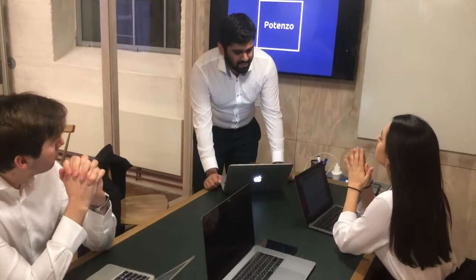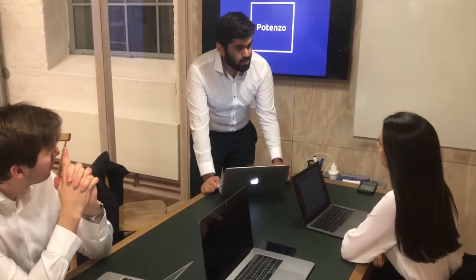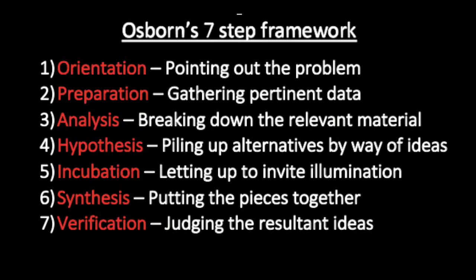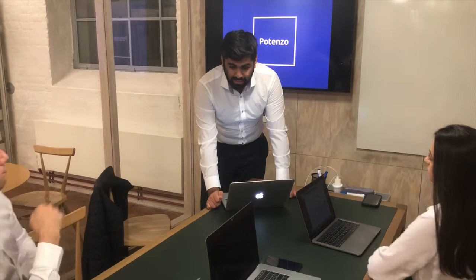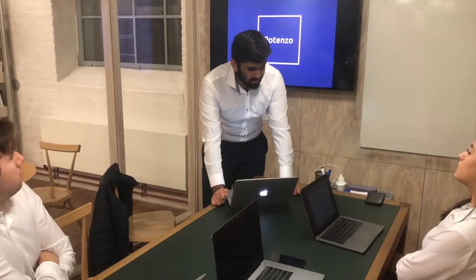The problem-solving technique we can use to find a solution is the Osborne 7-step process. The first step is to pick out the problem. From the Ishikawa diagram, we can see that there is a lack of training and a high level of youth unemployment, which causes a shortage of skills in the workforce.